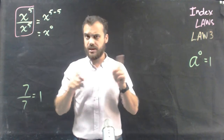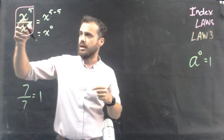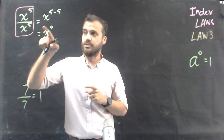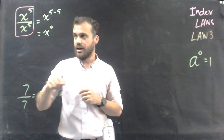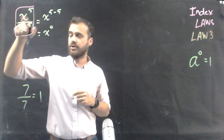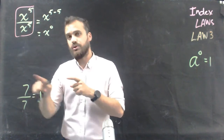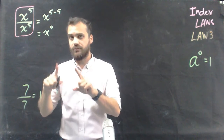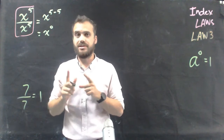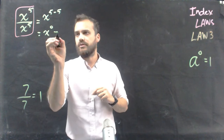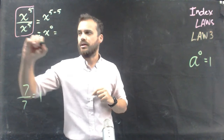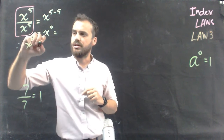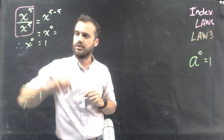So we've got two competing ideas. x to the 5 divided by x to the 5, according to the second index law, will equal x to the power of 0. And x to the 5 divided by x to the 5, according to what you've learned about fractions, will equal 1. Therefore, math is consistent — it's a beautiful thing. Therefore, x to the power of 0 is equal to 1. That's why it works.